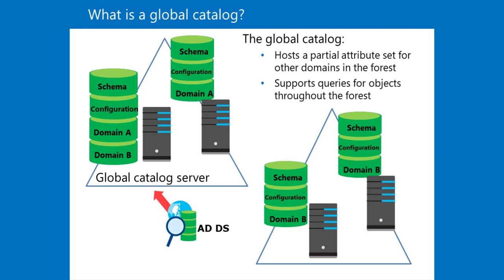In a single domain, you should configure all the domain controllers to hold a copy of the global catalog. However, in a multiple-domain environment, the infrastructure master should not be a global catalog server unless all the domain controllers in the domain are also global catalog servers.